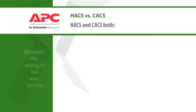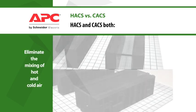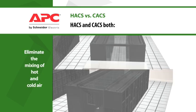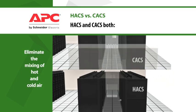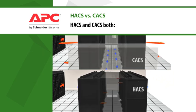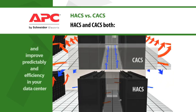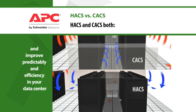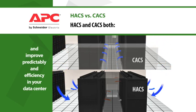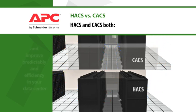Both the Hot Aisle and Cold Aisle Containment Systems eliminate the mixing of hot and cold air. By keeping these air streams separate, the cooling system can run with more predictability and efficiency.